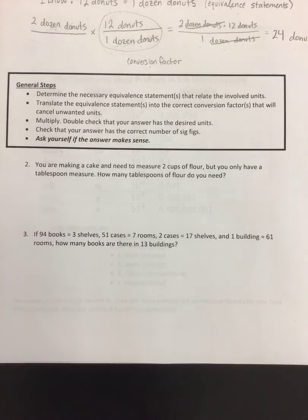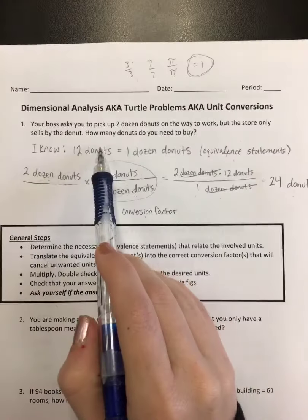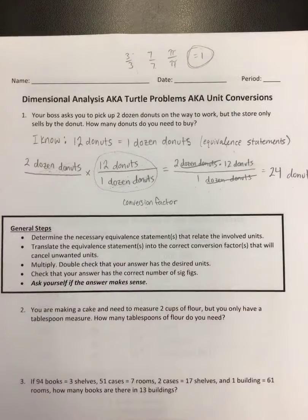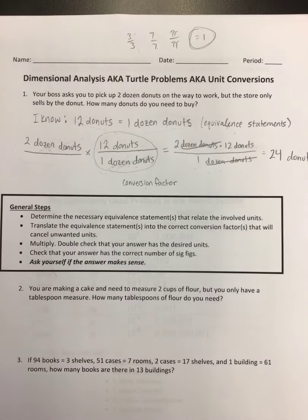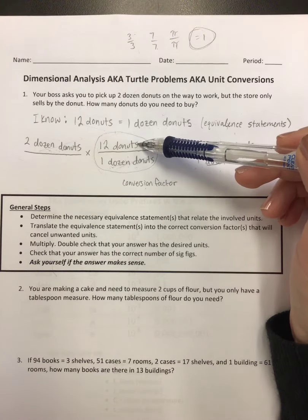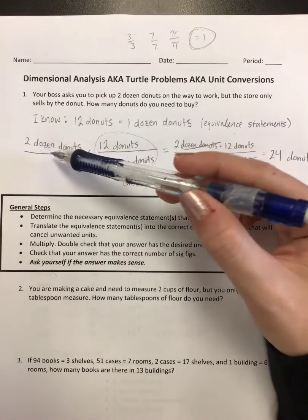The first step is to determine the necessary equivalent statements that relate the involved units. Like in this one, we found that we wanted to start with dozens of donuts and end up with plain old donuts, and we found the equivalent statement that related them. Then you want to translate the equivalent statements into the correct conversion factors that will cancel unwanted units.